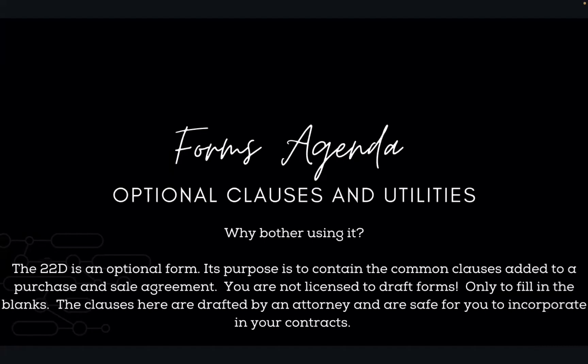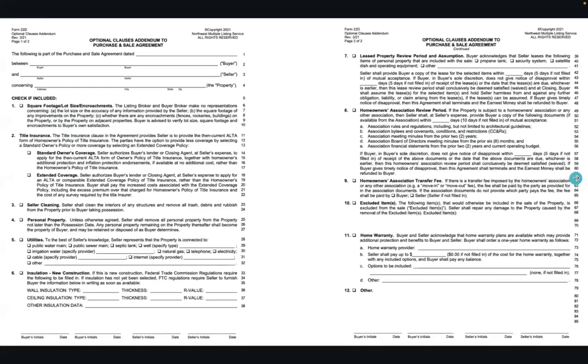The reason it's on one form like this is because we are not licensed to draft these clauses ourselves. These ones are drafted by a lawyer, already filled out for us, so the clauses here are safe to incorporate in our contract and they're done in an easy format with checkboxes. I pulled up the 22D so we could all reference the form, and I will go through it in more detail line by line.